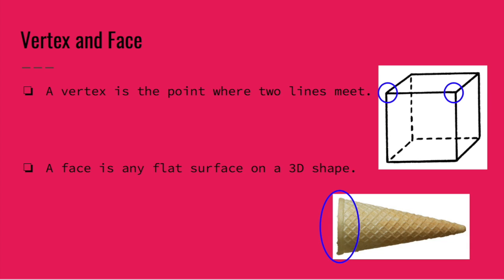Now if a shape has more than one point or corner, they might have two vertices or three vertices. That's the plural form.